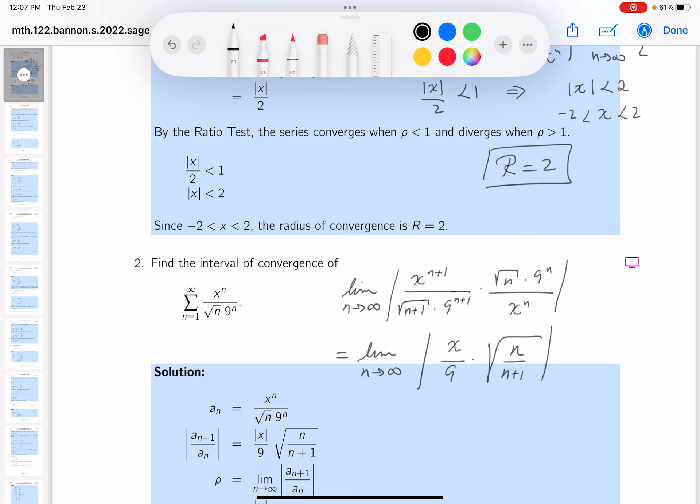What I noticed about this is that as n goes to infinity, it's going to be really the root of 1 because you divide through by n. And this limit would equal the absolute value of x over 9. And what's it supposed to be? It's supposed to be less than 1. So the absolute value of x is less than 9, which means x is between minus 9 and 9.